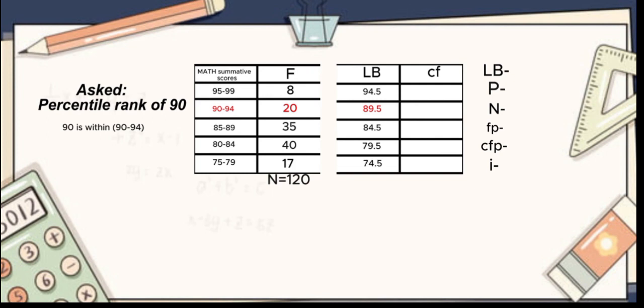To get the CF or cumulative frequency in the fourth column, you just need to copy the last number under the F or frequency. The last number is 17 where the red circle pinpoints. Copy the 17 and put it where the green arrow pinpoints. After copying, add the numbers in a diagonal form. You should add the copied number 17 to 40. 17 plus 40 is equal to 57. Put your answer where the green arrow pinpoints. The process is the same. Add the number 57 to 35 and put your answer 92 here where you see a green arrow, and so on.